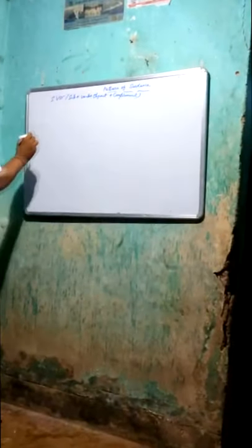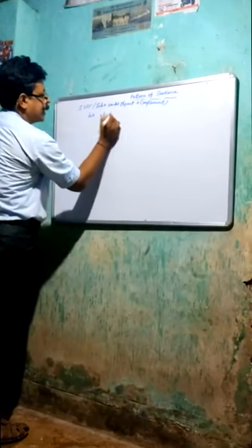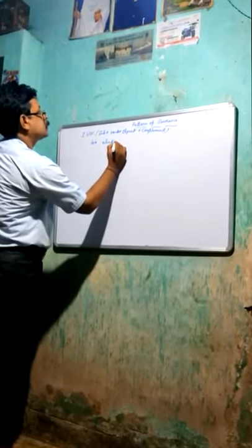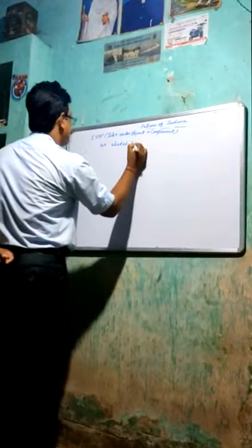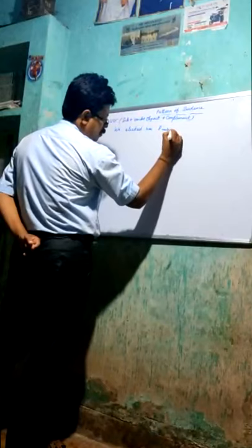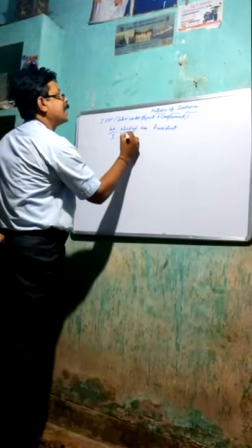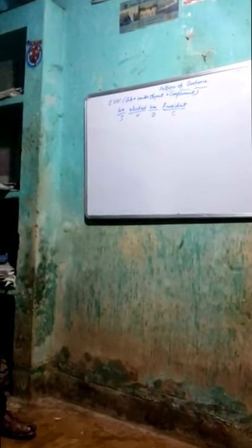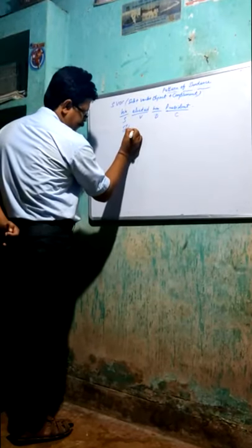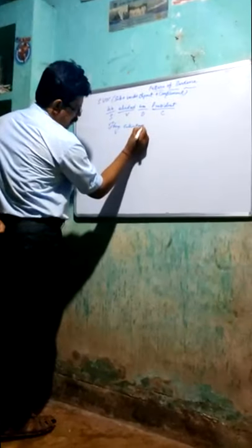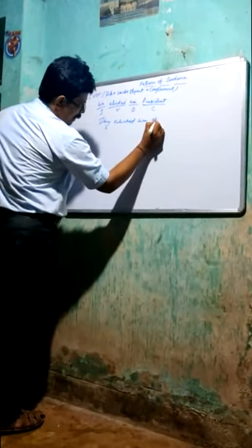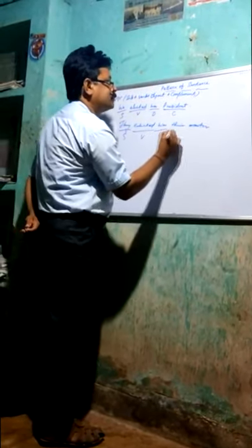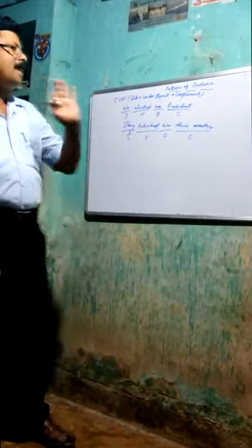The last pattern of sentence is SVOC: subject plus verb plus object plus complement. For example: 'We elected him president.' We is the subject, elected is the verb, him is the object, and president is the complement. Another example: 'They selected him monitor.' They is the subject, selected is the verb, him is the object, and monitor is the complement. These are the examples of SVOC.